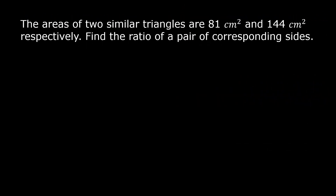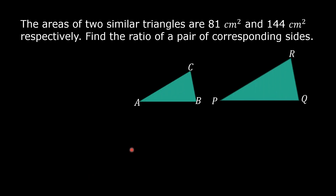Let us solve this problem. The areas of two similar triangles are 81 square centimeters and 144 square centimeters respectively. Find the ratio of a pair of corresponding sides. Let us draw the figures. Let us name the first triangle, triangle ABC, and the second triangle, triangle PQR. Triangle ABC is similar to triangle PQR.